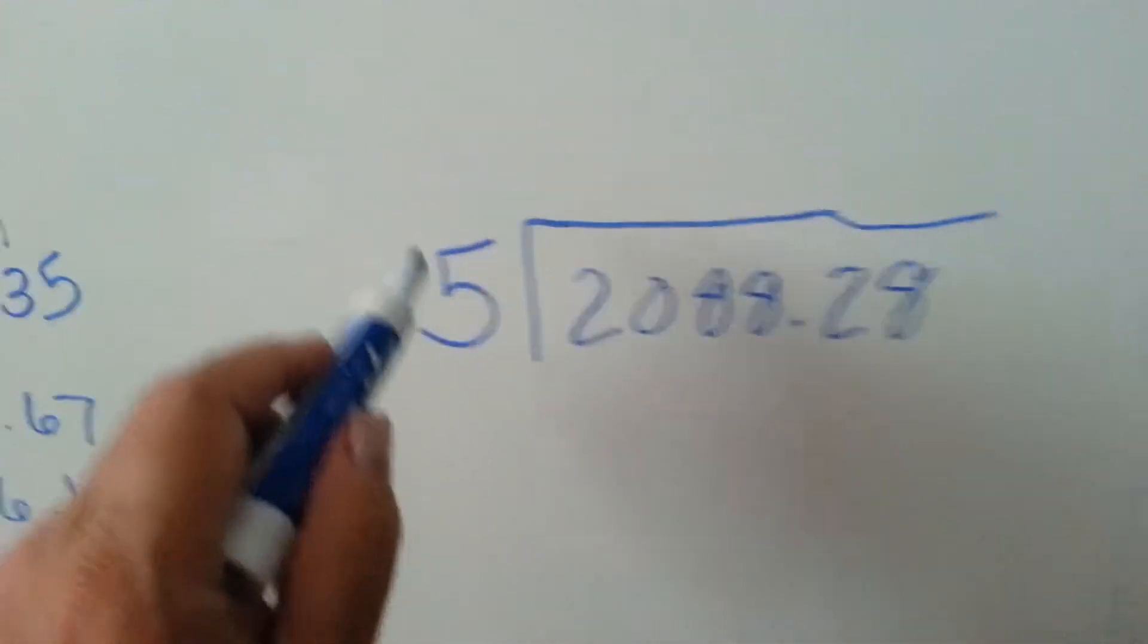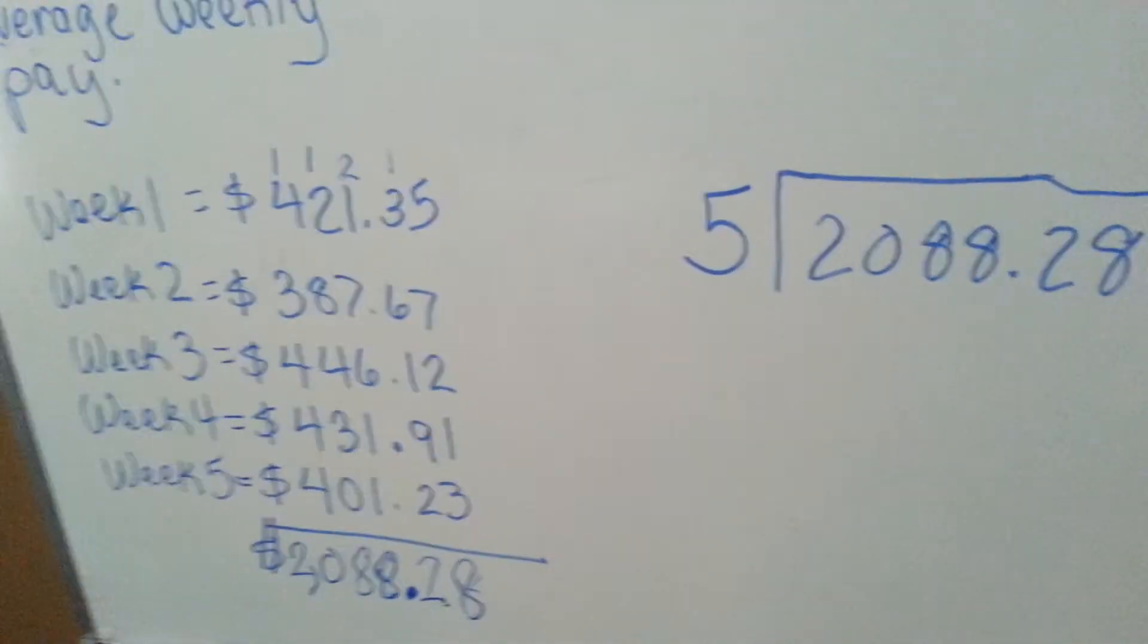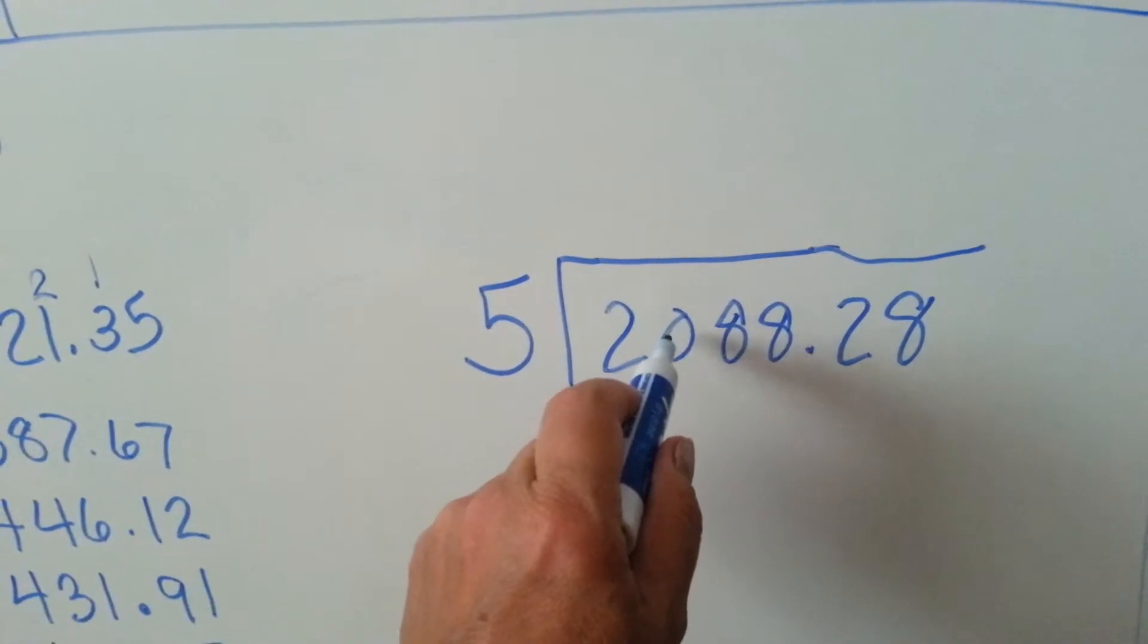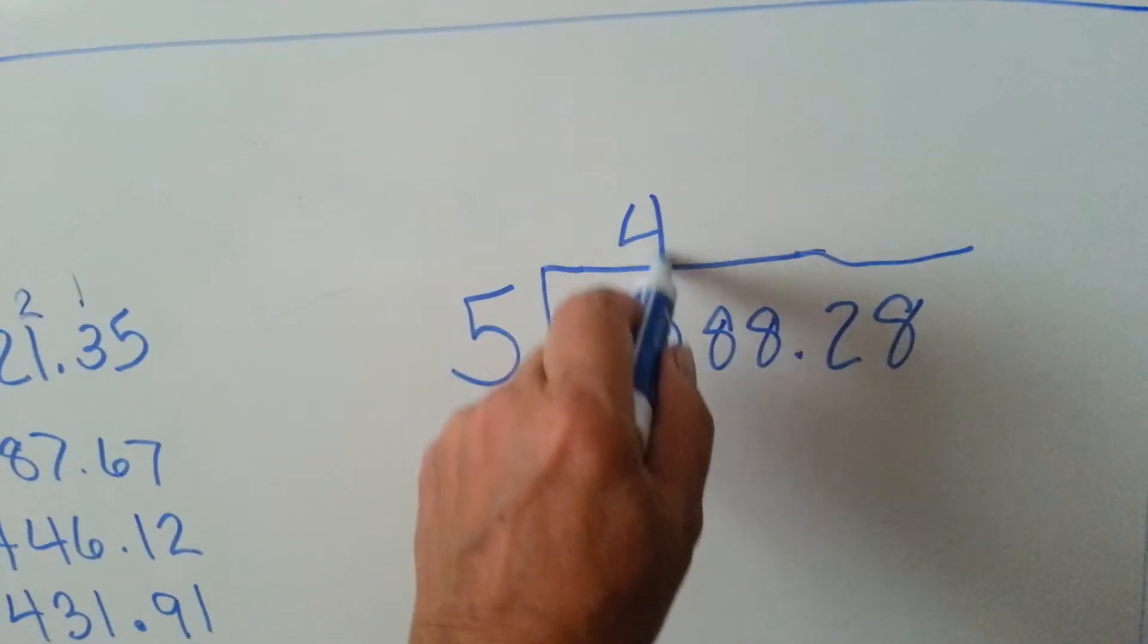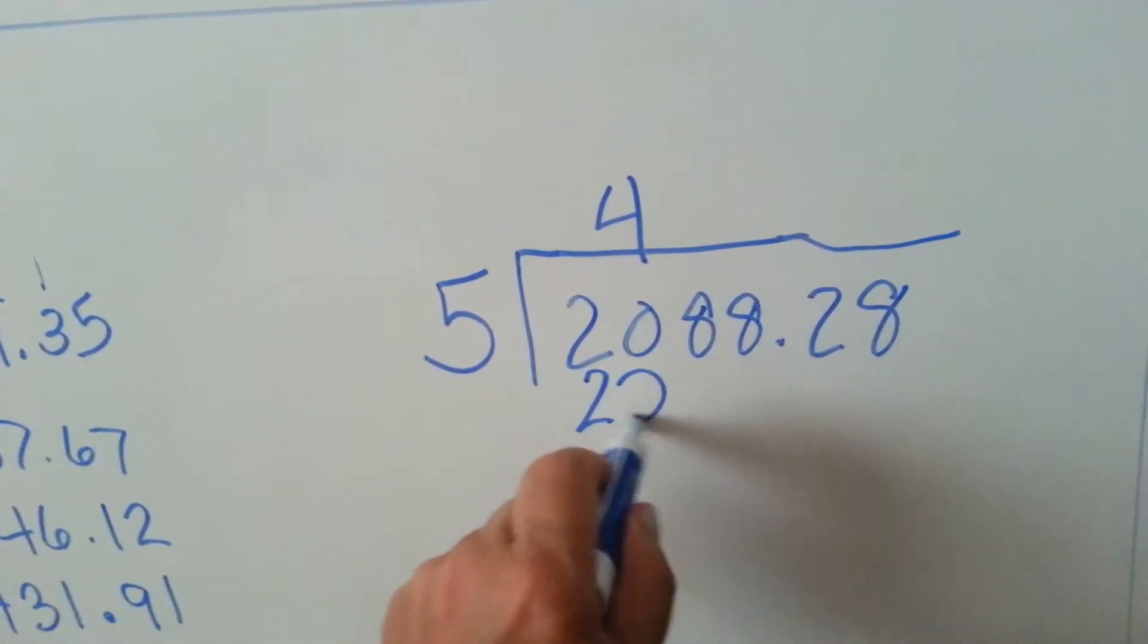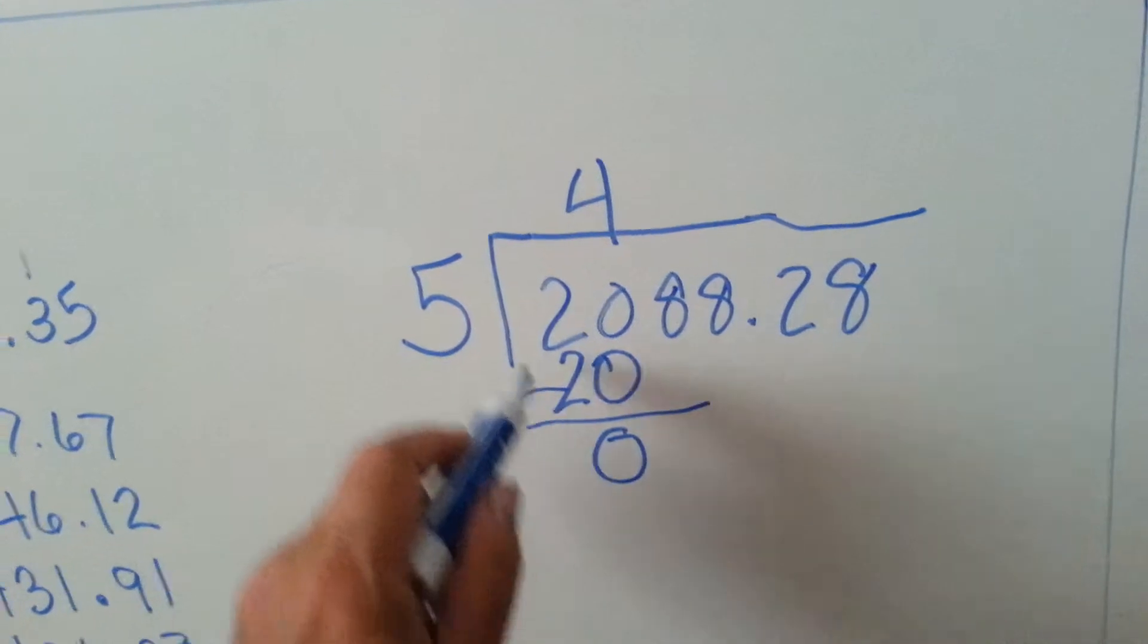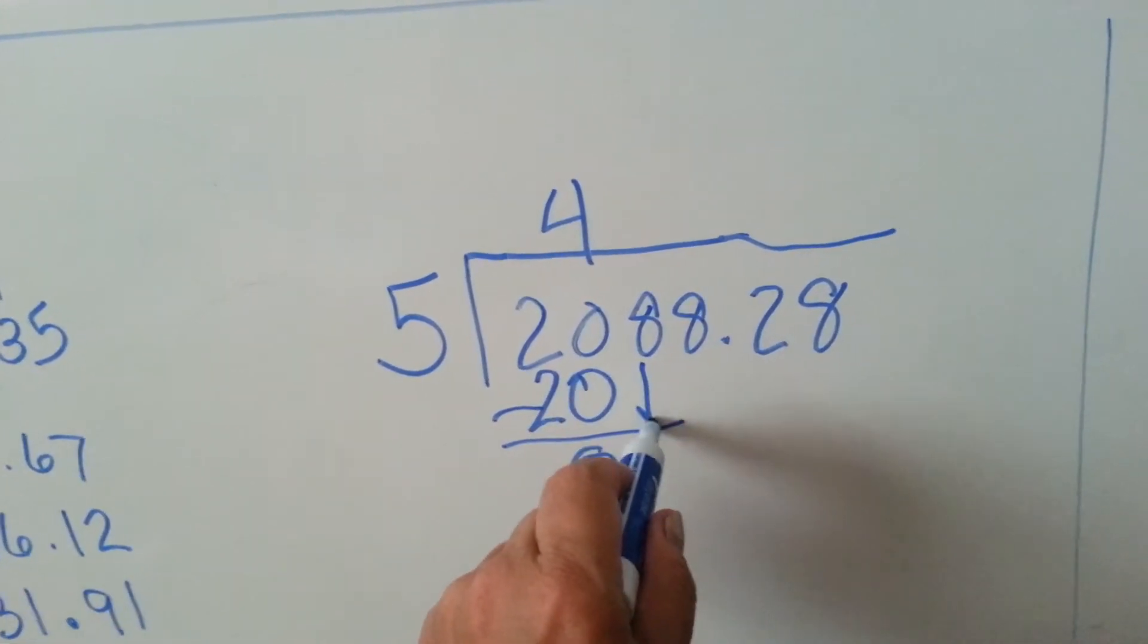We're going to divide this number by 5, and that is going to give us the average. 5 cannot go into 2, but it can go into 20. So we're going to write our number above the 0. 5 times 4 is 20. We write the 20 there that we multiplied by, do our subtraction, and we get 0. Can 5 go into 0? No. So it's the 8's turn to come down.